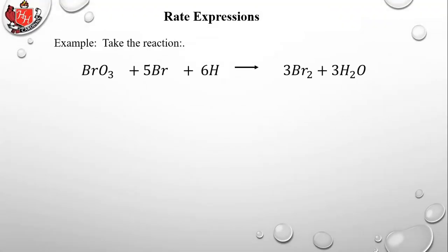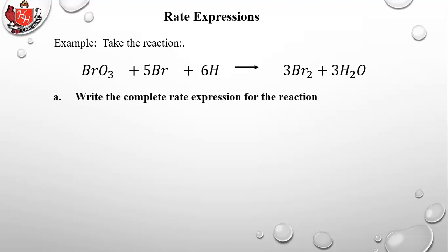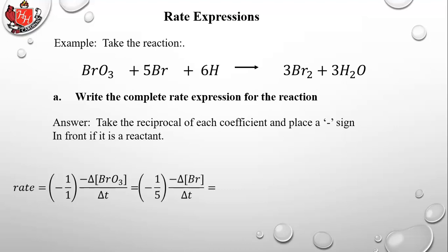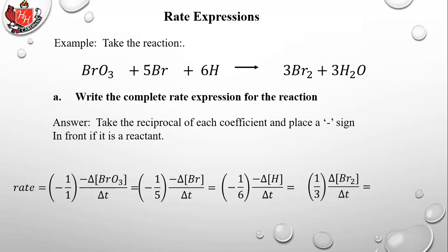Let's take an actual problem. Write the complete rate expression for the given reaction. Take the reciprocal of each coefficient: BrO₃ has coefficient 1, so it's negative 1/1 times the negative concentration of BrO₃. For 5Br⁻ it's negative 1/5 times the reducing concentration of Br⁻. For hydrogen it's negative 1/6 times the reduction in concentration of H⁺. For Br₂ on the product side — no negative sign — it's 1/3 times the increasing concentration of Br₂. Finally, water is also 1/3 times delta [H₂O] over delta T.